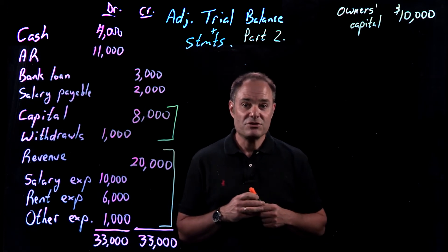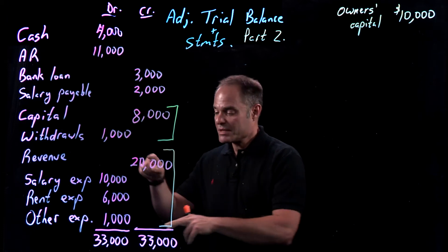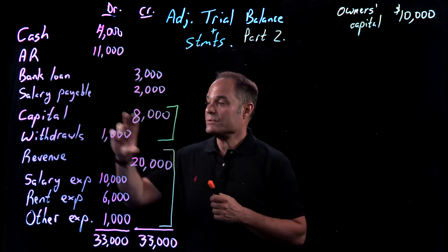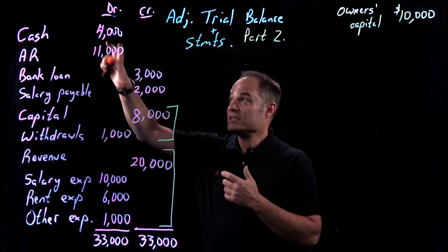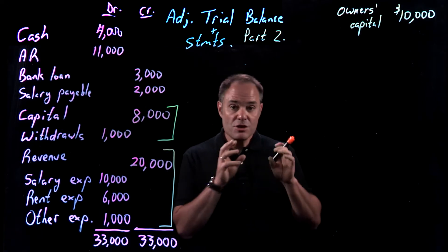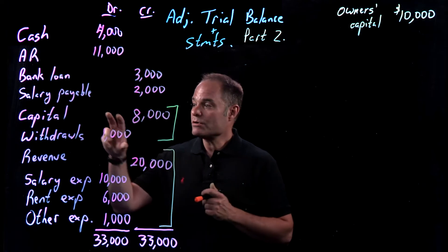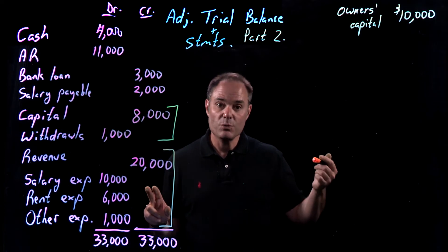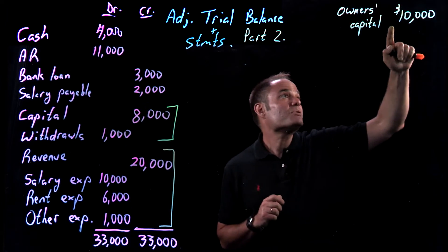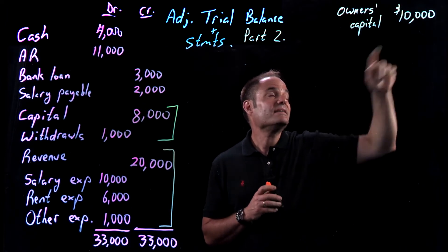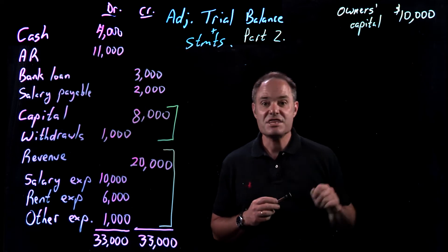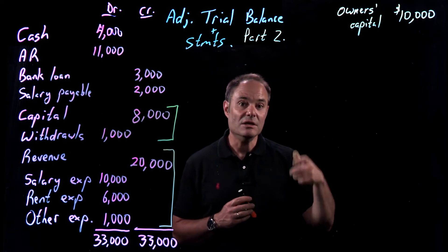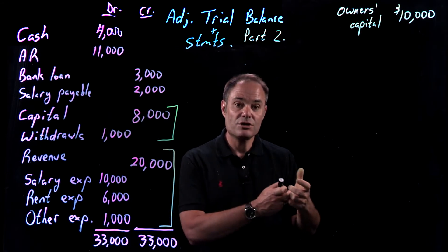In our last video, we started preparing the financial statements and we built the income statement. That came from the bottom of our adjusted trial balance, and we built the statement of owner's equity, which came from the middle part. Now we're ready to build the balance sheet, which is going to use the top part. The reason that we have to go in order is in order to build the statement of owner's equity, we needed to know what the net profit number was — that was part of the calculation for working out the owner's equity. We calculated the ending owner's equity or owner's capital as $10,000, and we're going to need that for the balance sheet. We need the calculation from one statement in order to build the next statement.